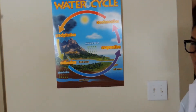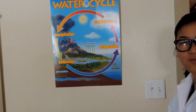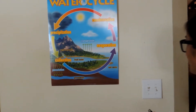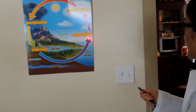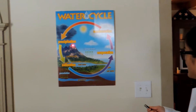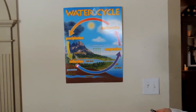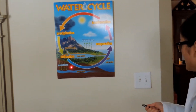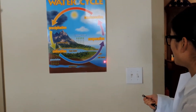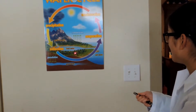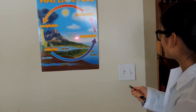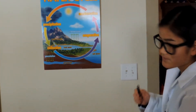Here is an overall view of the water cycle. It is made of evaporation, condensation, precipitation, collection, percolation, groundwater, salt water, fresh water, surface runoff, and transpiration.